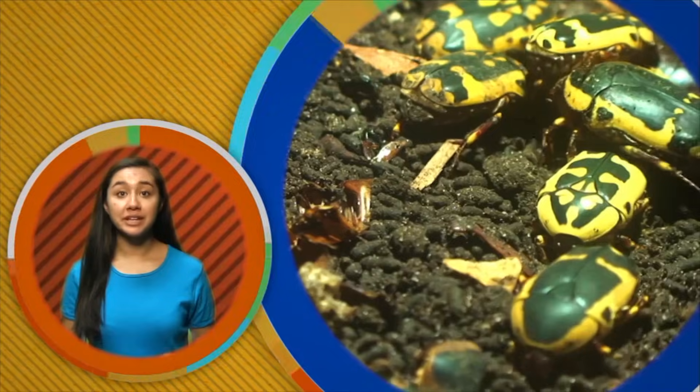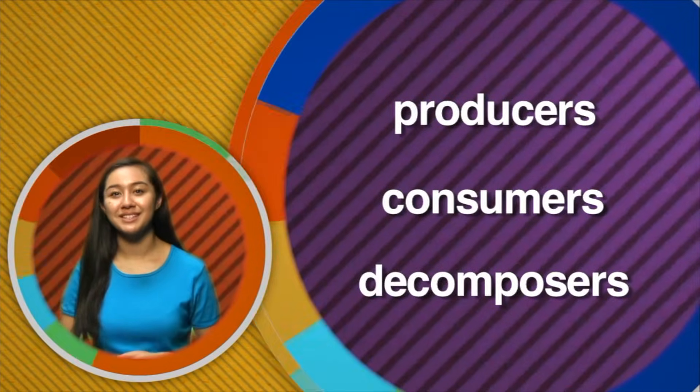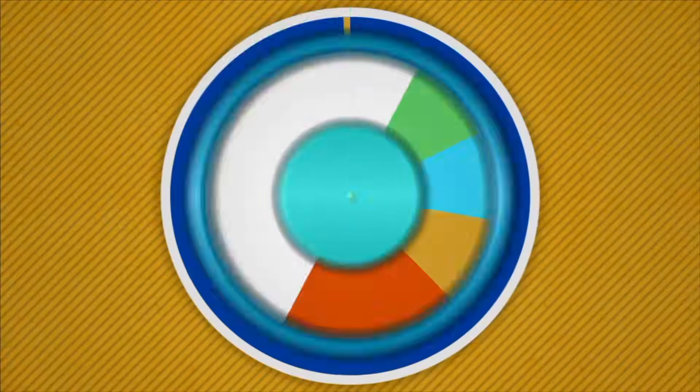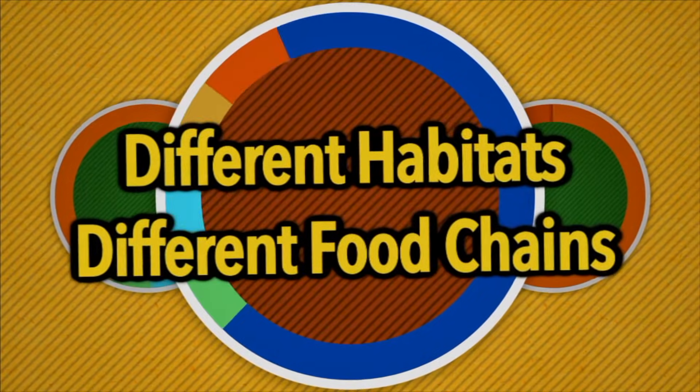Now you know the links of the food chain: producers, consumers, and decomposers. It's easy to see how all of nature is interconnected and related. Different habitats, different food chains. Let's take a look at how the links all come together in different habitats to form food chains. A food chain shows the relationship between the plants and animals in different habitats.